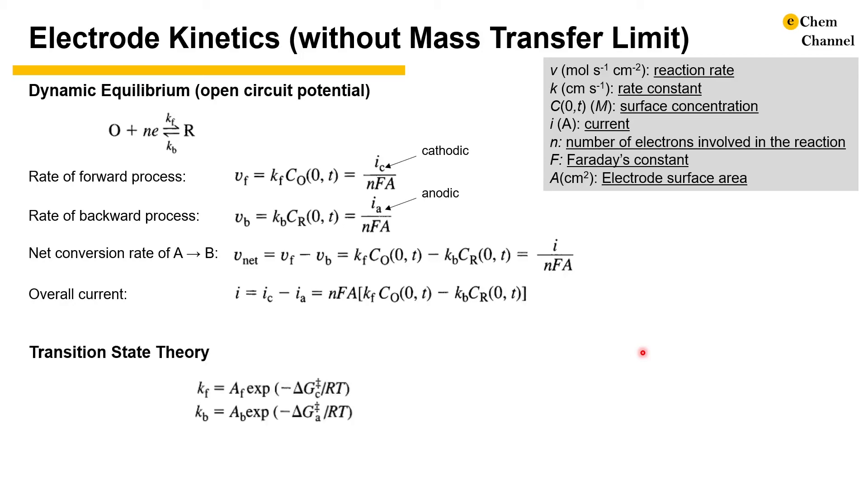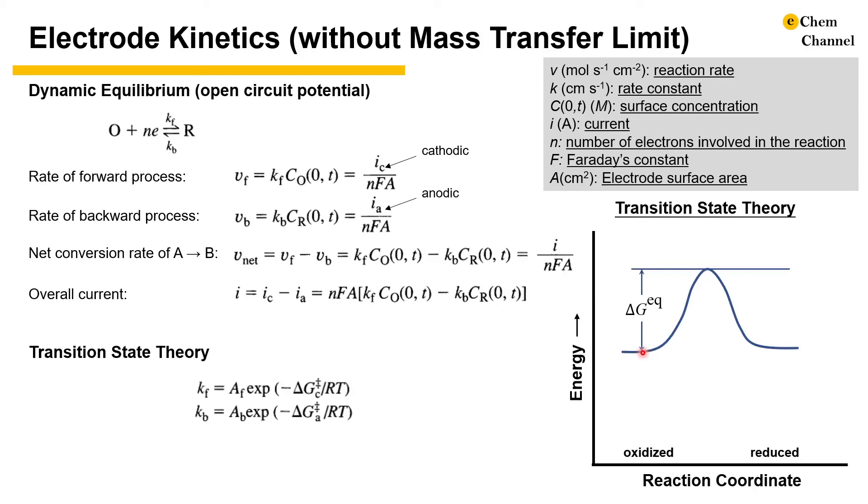The rate constant still follows the Arrhenius equation, but with a modified unit of centimeter per second. In addition, now as we move away from equilibrium, the rate constant changes accordingly. The energy diagram on the right demonstrates this process. At equilibrium, by definition, the forward and backward reactions have the same activation energy. As we apply a negative over potential eta to the electrode, we shift the energy of the reduced form by NF eta.